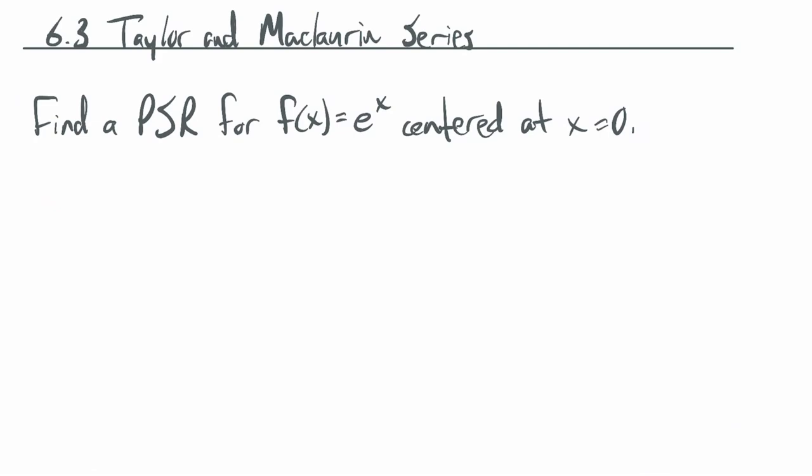This video is another in the series for Math 1224 for UTSA. Today we're talking about 6.3 Taylor and McLaurin series. Rather than jumping right into definitions and formulas, I want to start with a somewhat concrete example to give a big picture of the whole thing. We're going to find a power series representation for f of x equals e to the x, centered at x equals 0.